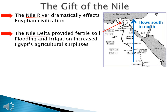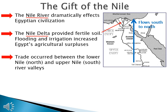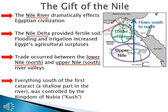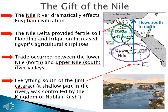We also have two major areas within ancient Egyptian civilization, and we're going to have trade between them. Trade occurs between the lower Nile, which is the northern part of the Nile River Valley, and the upper Nile, which is the southern part. Everything south of the first cataract — the first shallow part in the river — is no longer Egypt. That is an area controlled by a kingdom called Nubia, or Cush.